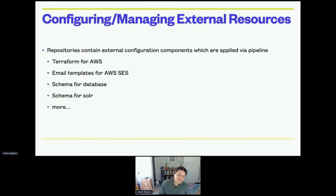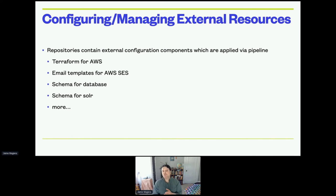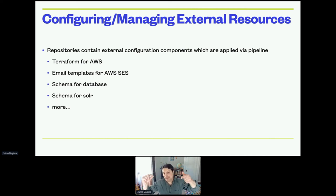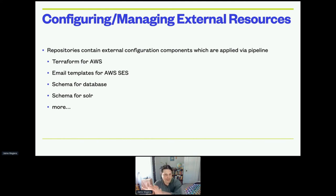Configuring and managing external resources: we have repositories that contain external configuration components, which are applied via the pipeline — Terraform for AWS, email templates for Amazon SES, schema for databases, schema for Apache Solr, and more. We're getting to the point where promoting a Git commit hash means not just the code, but the DevOps engineers are working to make it so it's all of the resources — that Git commit hash represents everything being ready for all of the resources necessary to go to the next step.